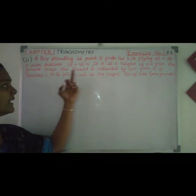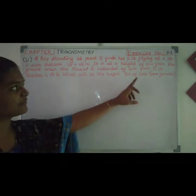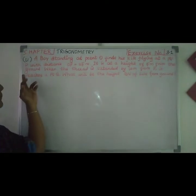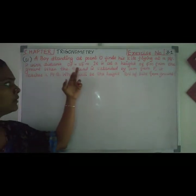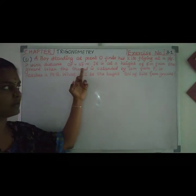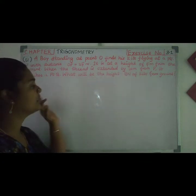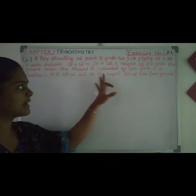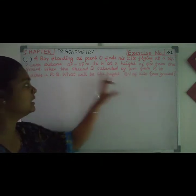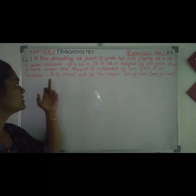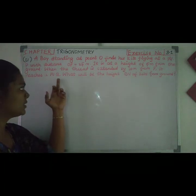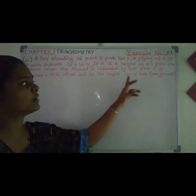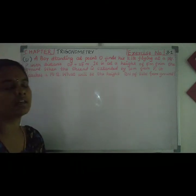A boy standing at point O finds his kite flying at point P, with a distance OP equal to 25 meters. It is at a height of 5 meters from the ground. When his thread is extended by 10 meters from P, it reaches point Q. What will be the height of Q, the kite, from the ground?